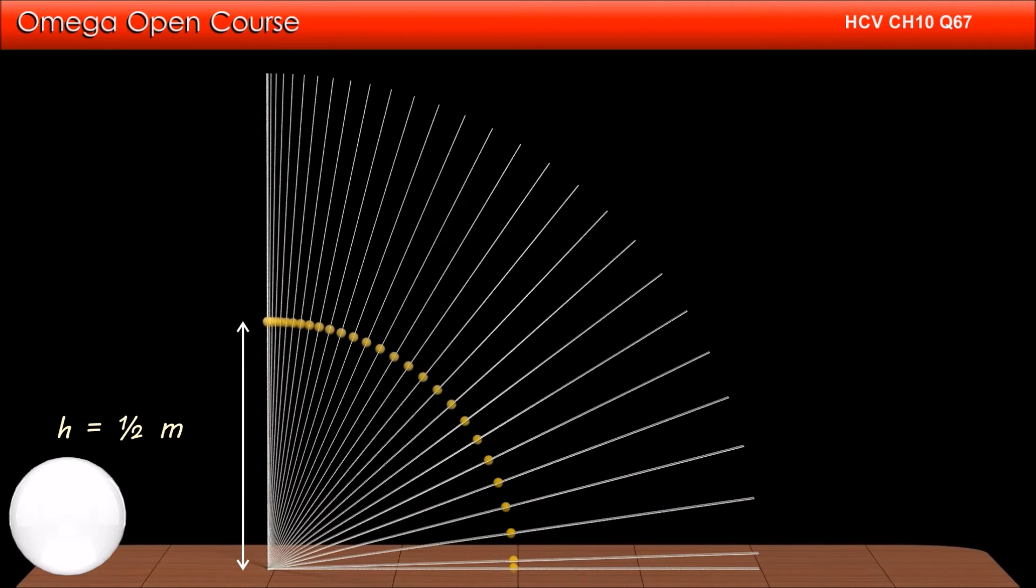So, if the mass of the stick is m, the decrease in gravitational potential energy of the stick is mgh, or m into 9.8 into 1 by 2, or 4.9m.